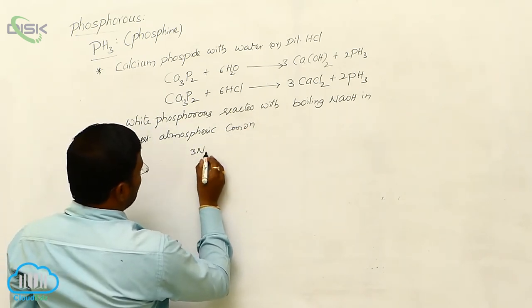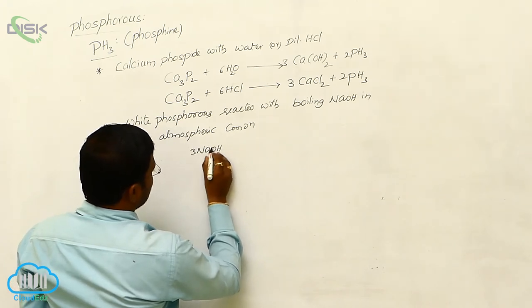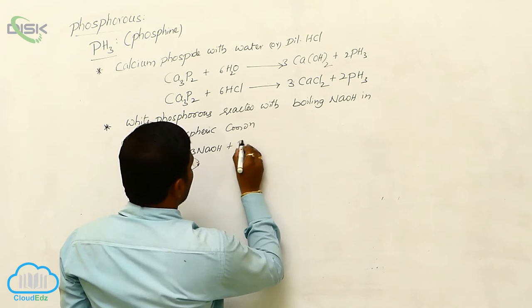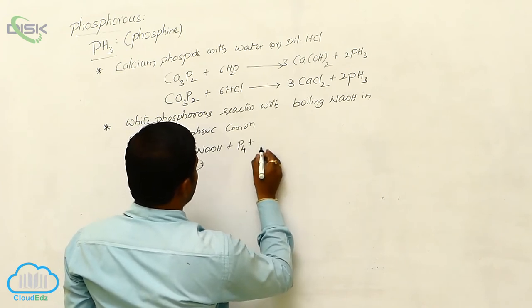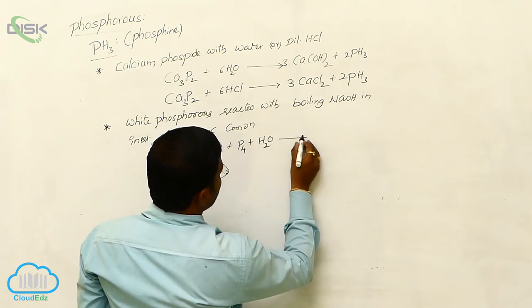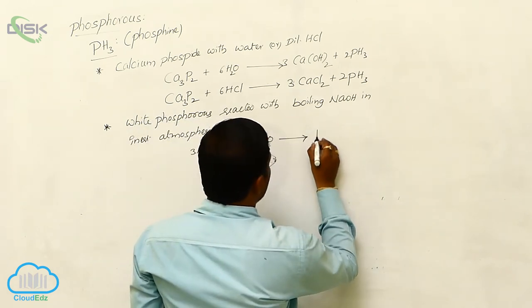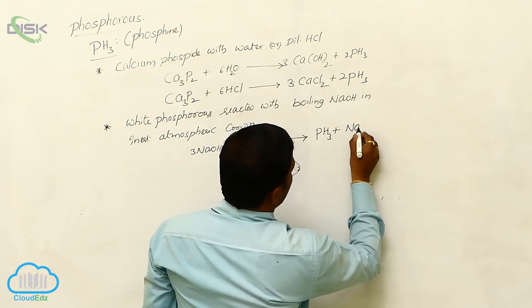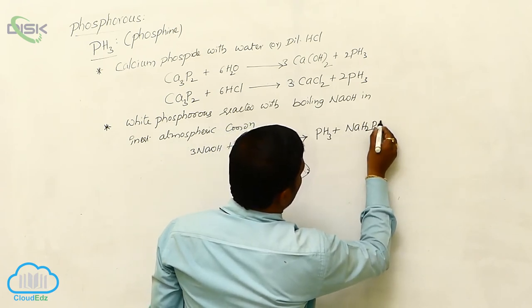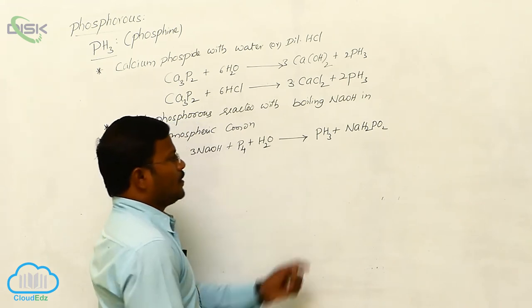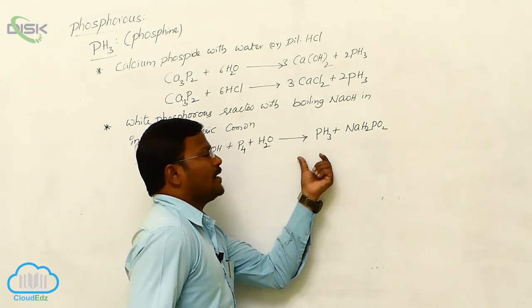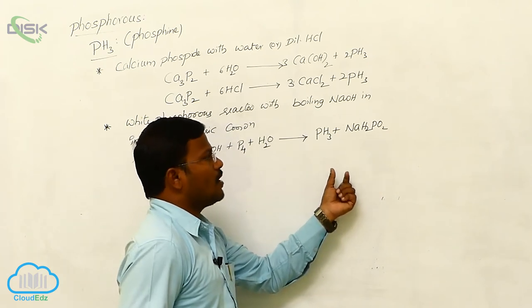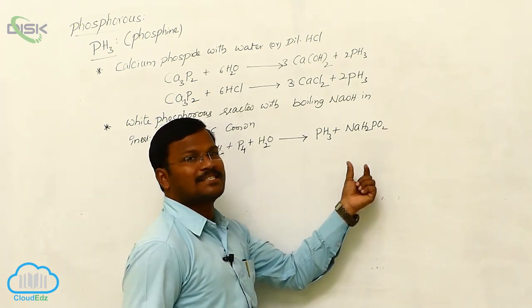So, this is a well-known reaction we just completed in case of white phosphorus. White phosphorus undergoes hydrolysis with sodium hydroxide to produce PH3 plus NaH2PO2. Phosphine and we can produce a side product during the reaction that is sodium hydrogen phosphite.